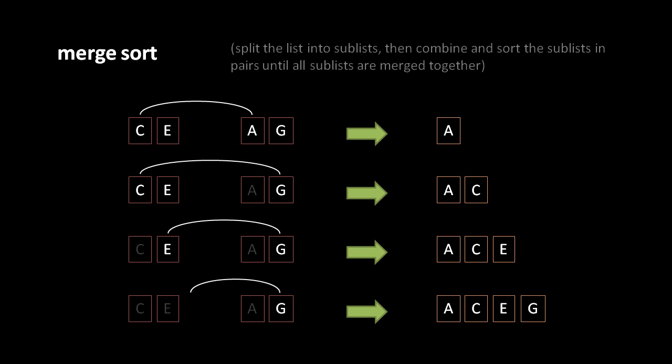To merge these two sublists we could just concatenate them together and then sort the result using any other sort algorithm, but the whole point of merge sort is that we have an efficient way of merging two sorted lists into one unified sorted list. The way this works is we compare the first items of both lists and take the smaller of the two values as the first item for our merged list. So in the comparison of C and A, A is the smaller value, so we take A.